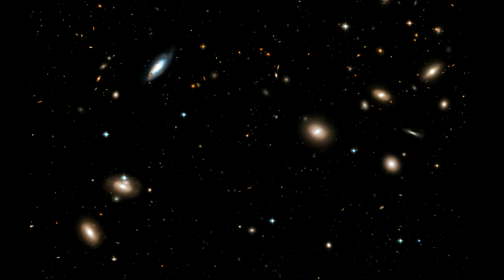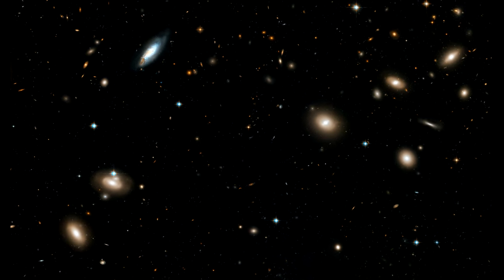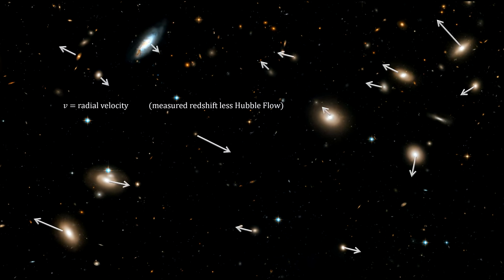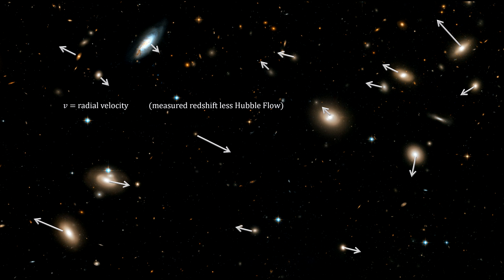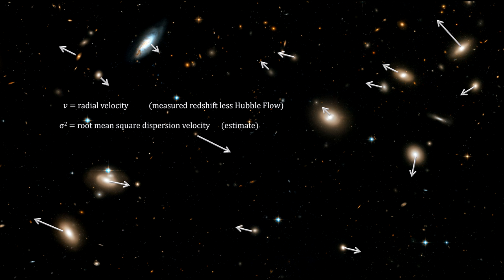The first step is to measure the radial velocities of every galaxy in the cluster from their Doppler shifts. This is then generalized into their three-dimensional velocity dispersion statistical equivalence.